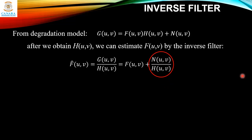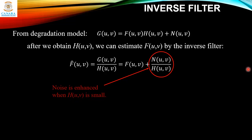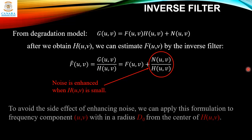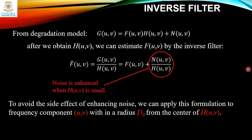Here lies the problem: if the value of H(u,v) is quite small, the noise term N(u,v)/H(u,v) will get amplified. This is the biggest problem of inverse filtering — it is called noise enhancement. When H(u,v) is small, the noise is amplified. To avoid this side effect, we can apply the transformation to frequency components within a radius d0 from the center of H(u,v).